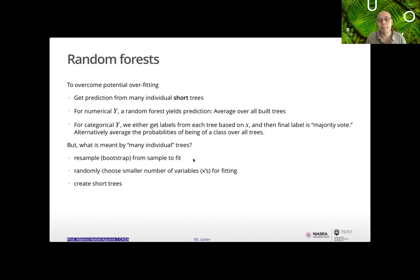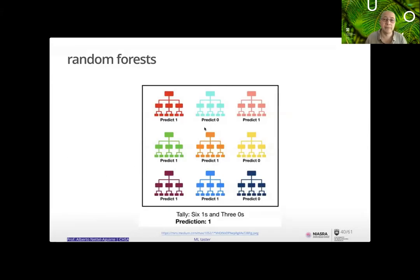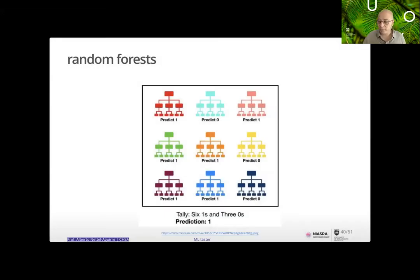You run your data through all the trees and get a vote. For example, with nine trees where the output for a given observation is: red predicts 1, blue predicts 0, pink predicts 1, etc. — six votes for 1 and three for 0 means the prediction is 1. Since these are smaller trees, you avoid overfitting, and random forests tend to work really well.